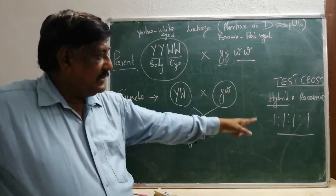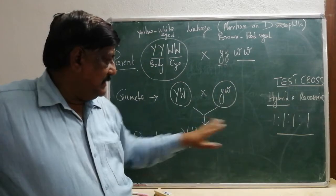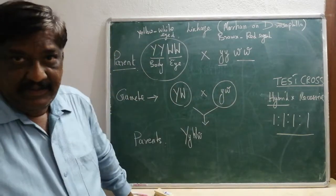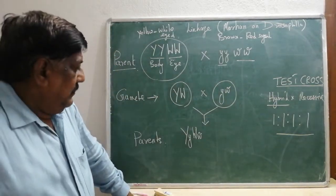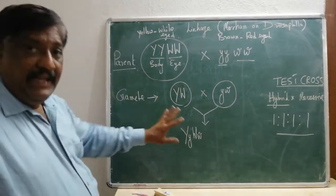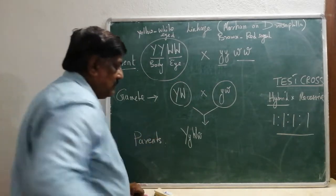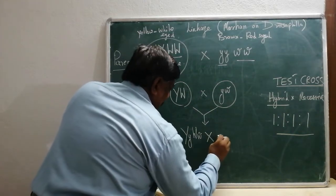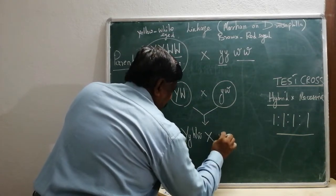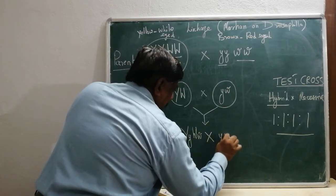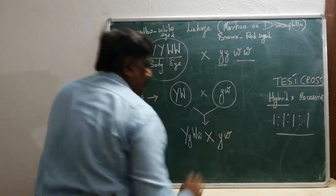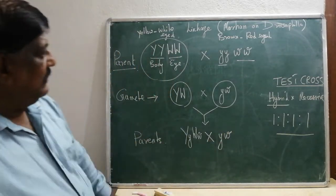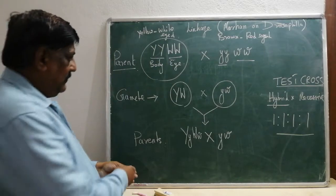If you do a test cross and get 1:1:1:1, then Mendel's experiment is correct. But when they did the test cross here, something different happened. Let us see how the test cross is done.